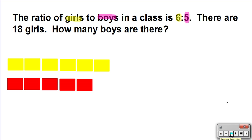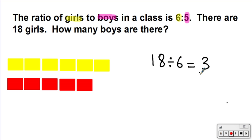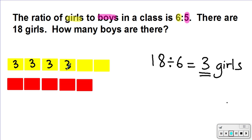I have 18 girls and they are represented by six parts. In order to find how many girls I have for one part, I'm going to do 18 divided by 6, and that gives me 3 girls per part. So for each part I would have three, three, three, three, three, and three.